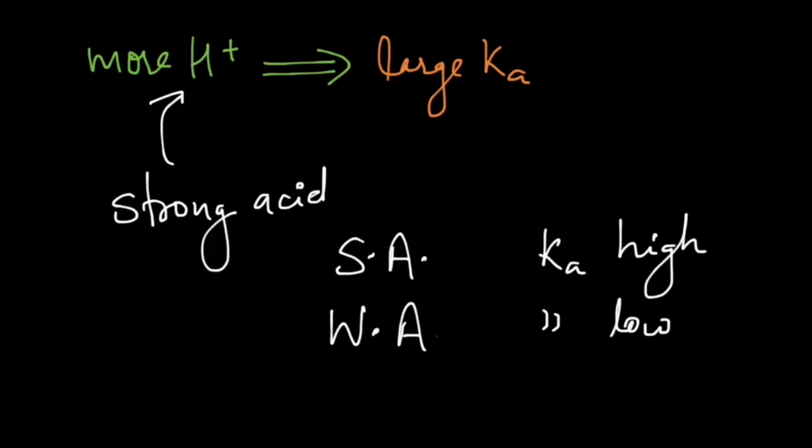So whenever you are asked to compare the Ka values of acids, all you need to see is which acid is stronger and which acid is weak. For example, if I take HCl and acetic acid and let's say the Ka value of HCl is K1 and for acetic acid it is K2, then we can easily write K1 is more than K2 because HCl is a stronger acid than acetic acid.